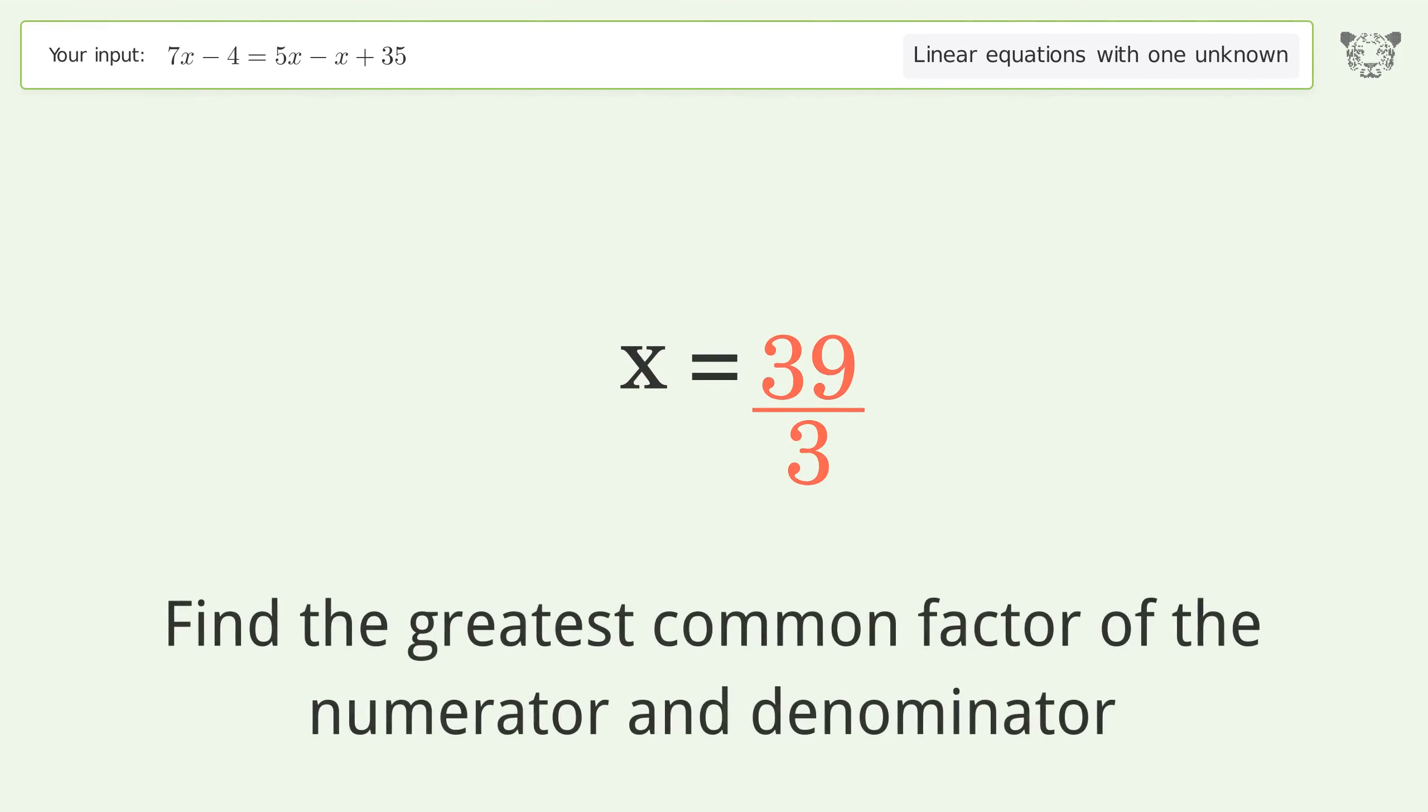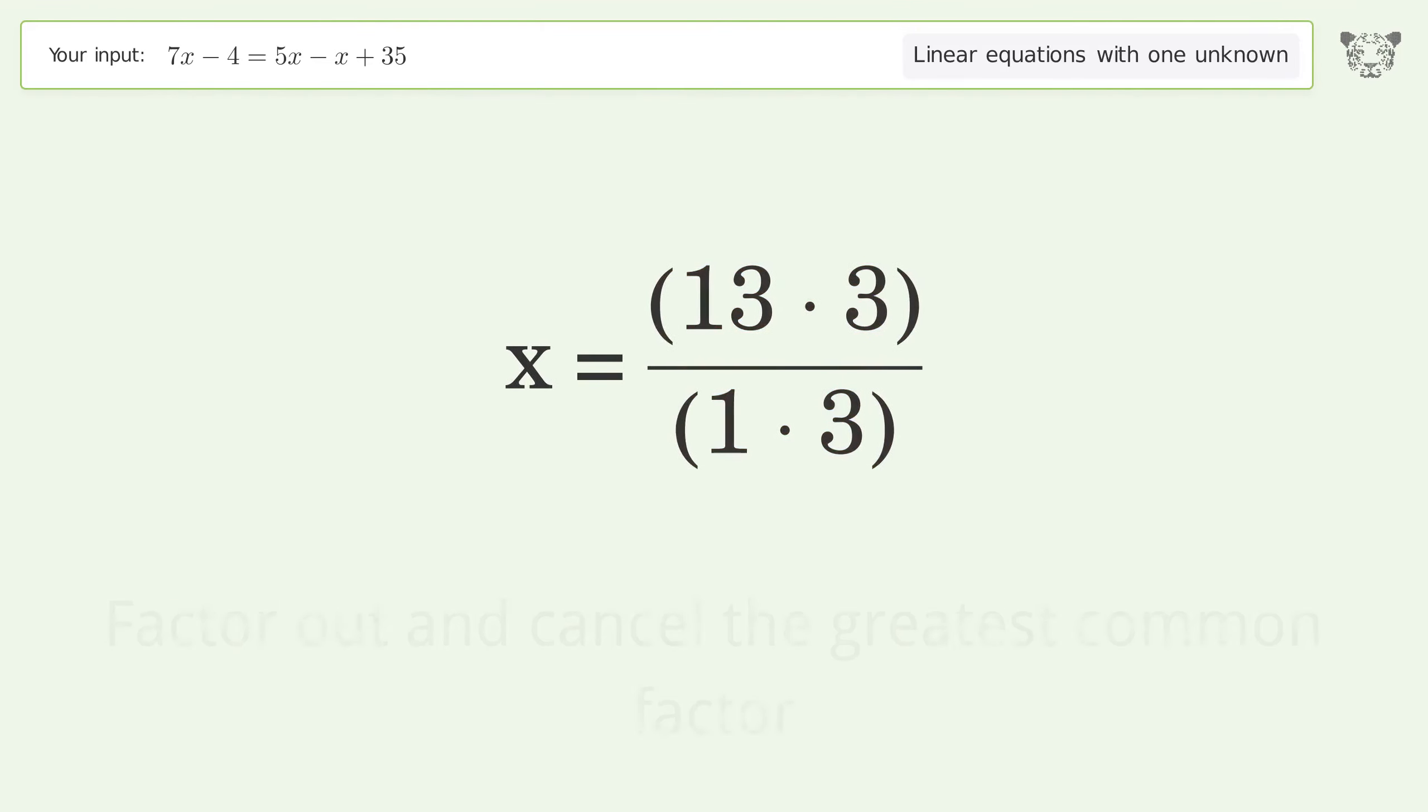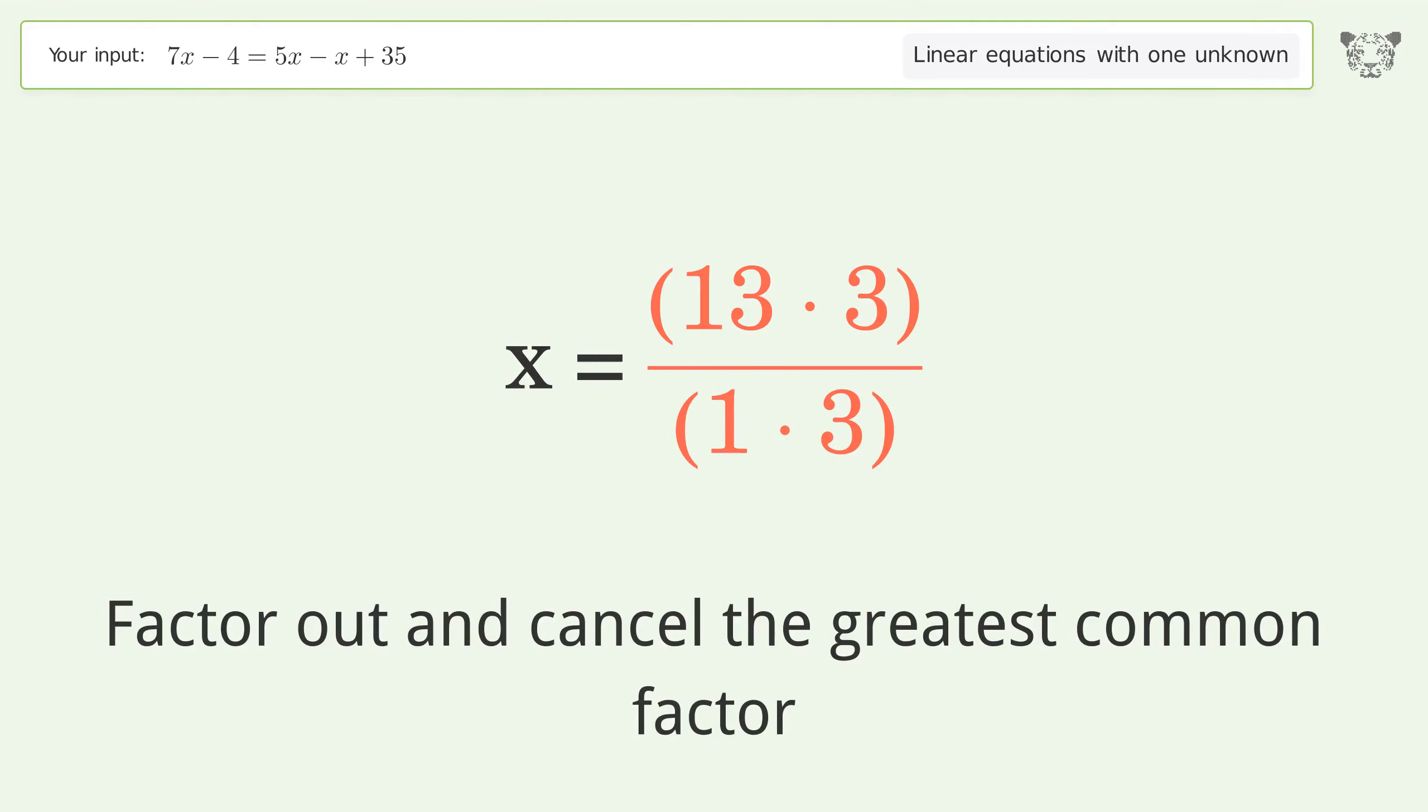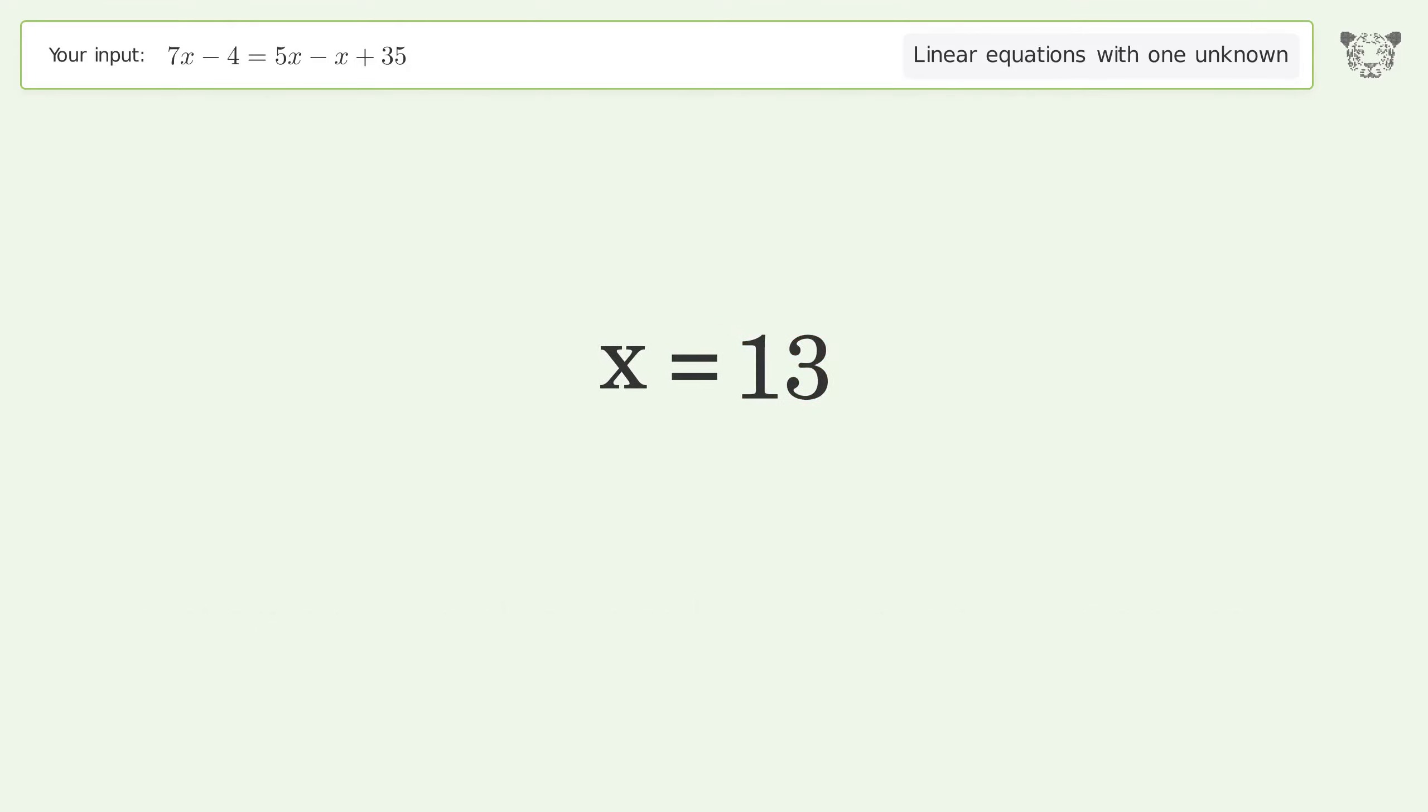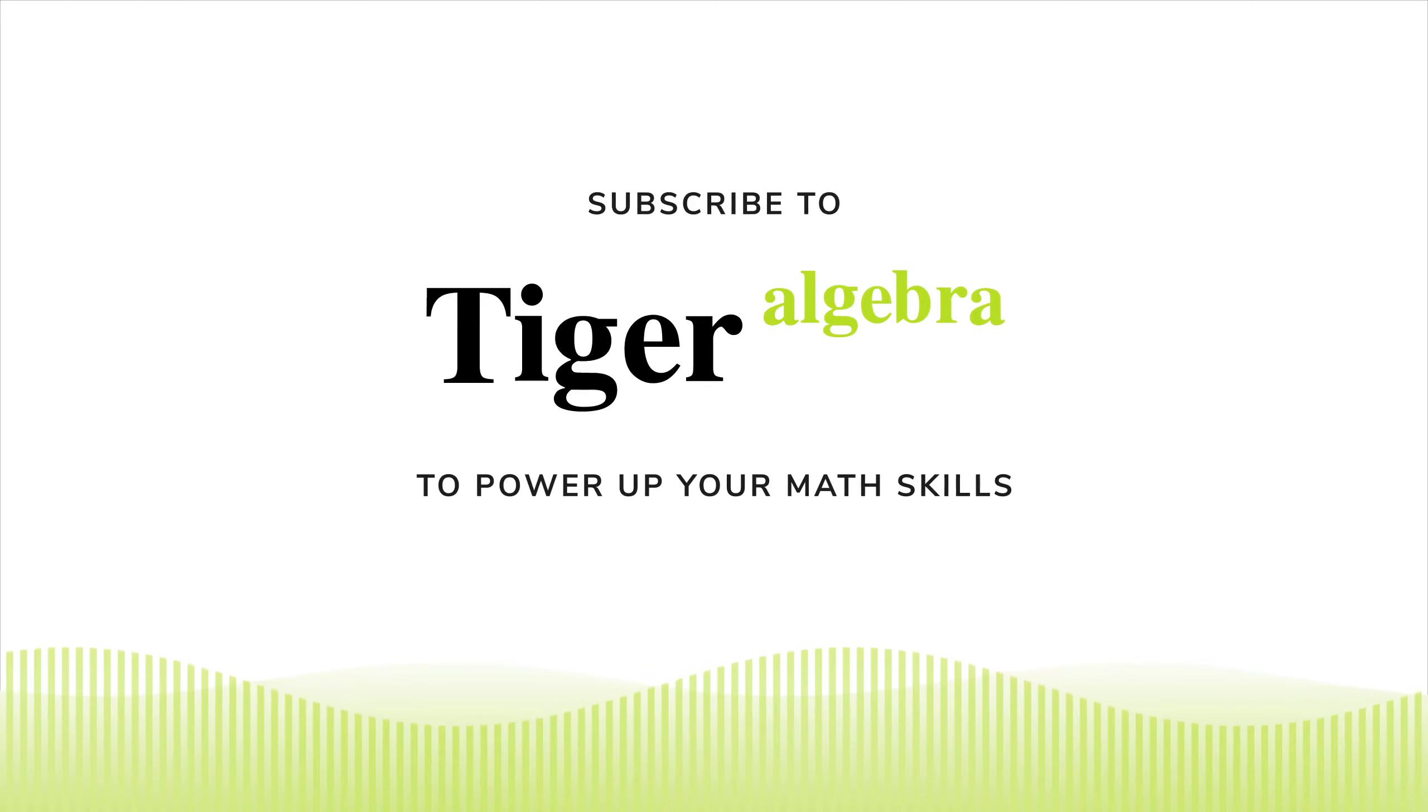Find the greatest common factor of the numerator and denominator. Factor out and cancel the greatest common factor. And so the final result is x equals 13.